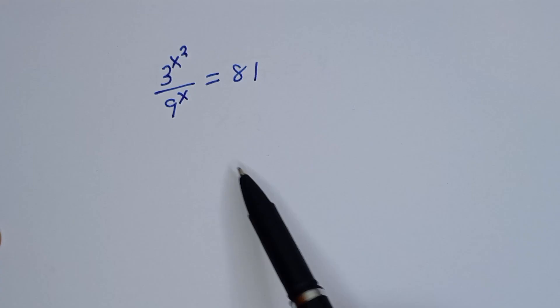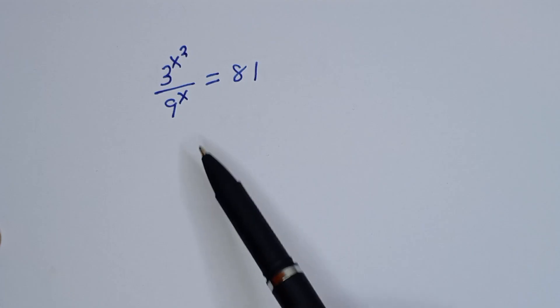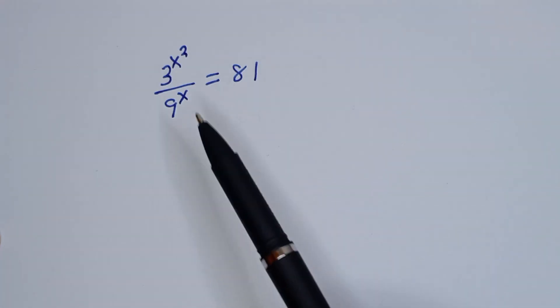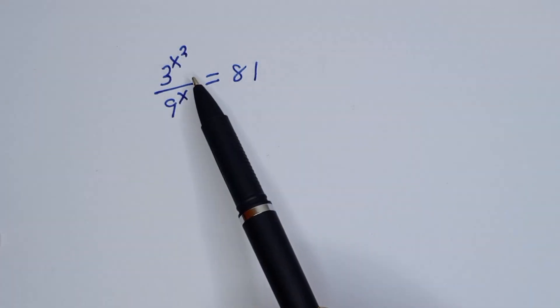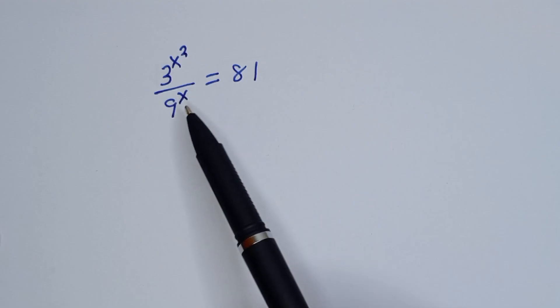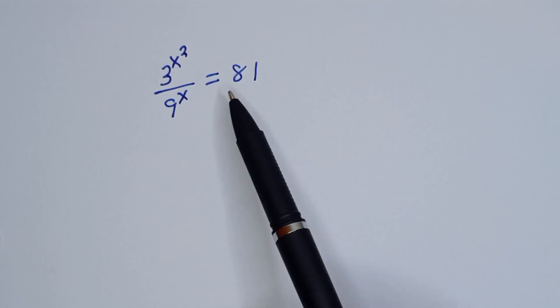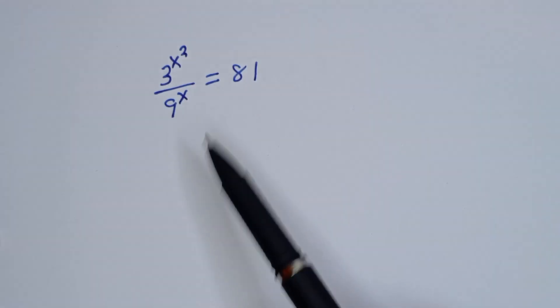Hello. How to solve for x from this given equation: 3 to the power of x squared divided by 9 to the power of x is equal to 81.